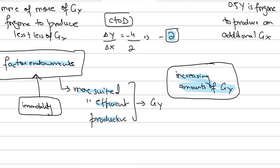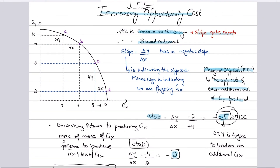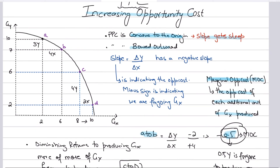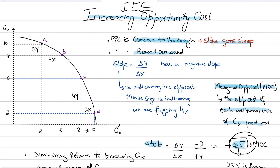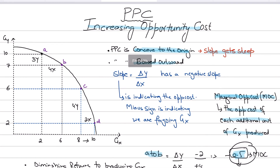Since the resources are immobile and more suited to good Y, if you use them to make more of X, less of X will be made as more and more resources are diverted to X — indicating diminishing returns to good X. At the same time, the opportunity cost of producing those units of X will also go up, because more and more of good Y has to be foregone. That sums up increasing opportunity cost. Make sure you explain it well — don't just draw the curve, explain it clearly for the examiner. See you in the next video where we'll be discussing constant opportunity cost.